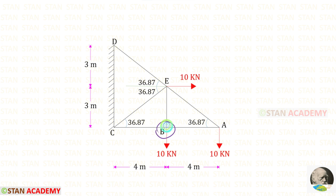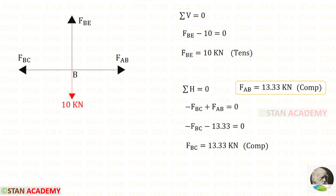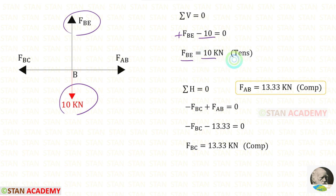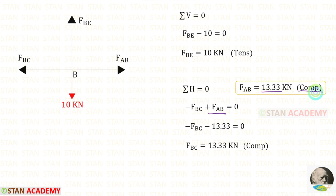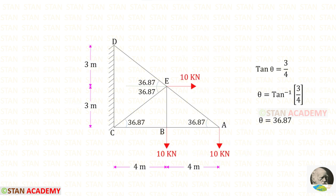Now let us take joint B and find the member forces. First let us apply sigma V = 0. FB is acting upwards, so it will be positive; 10 is acting downwards, so it will be negative. For FB we will get a positive value — that means it is tensile. Now let us apply sigma H = 0. FBC is acting towards the left side, so it will be negative. FAB is acting towards the right side, so it will be positive. We know FAB = 13.33 and it is compressive, so we apply it as negative. For FBC we will get a negative value — that means it is compressive.